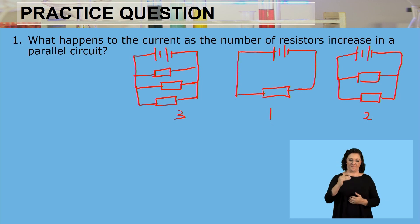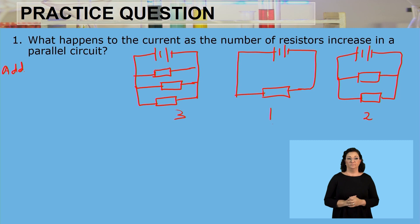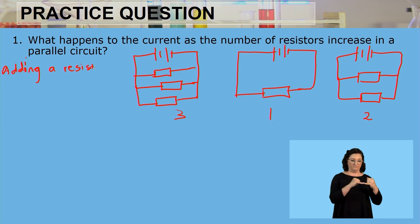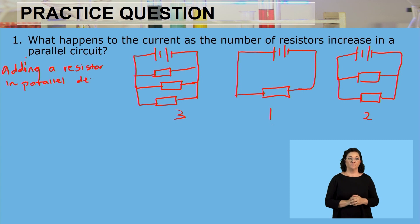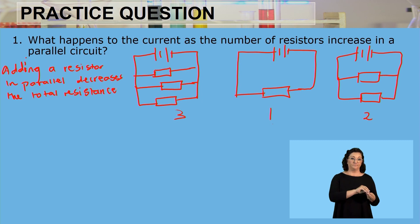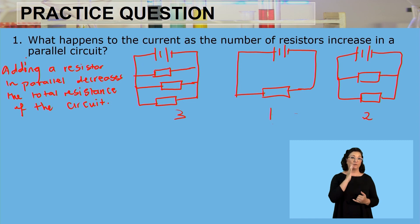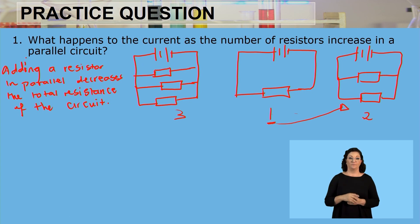What we need to know is this: in a parallel circuit, the more we add a resistor — so if we keep on adding a resistor in parallel — that decreases the total resistance of the circuit. So circuit number one will have a much higher resistance compared to circuit number two, because we've added another resistor. Once we add a resistor in parallel, the total resistance decreases.